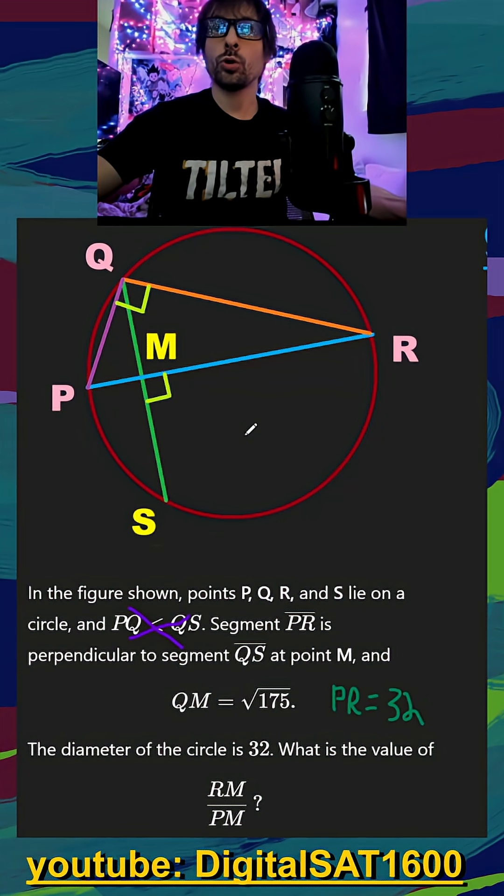Next, we're going to go through our chord rule, and that is anytime I have two chords or two lines inside of a circle, QS and PR, and they intersect, the product of their segments will equal the product of the other chord's segments. So let's kind of map that out. So if I take QM and multiply it by MS, that should equal the product of PM and MR.